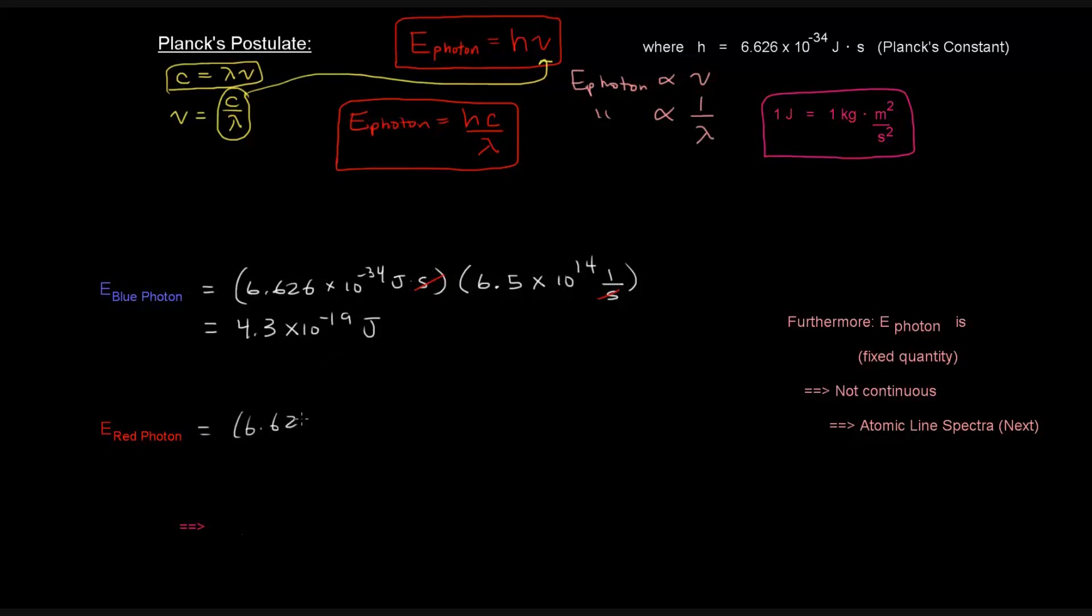So the same thing for the red photon. 6.626 times 10 to the negative 34 joules times seconds times its frequency, which was 4.5 times 10 to the 14th, 1 over seconds. Again, the seconds will cancel, and we'll be left with joules, and in this case, the answer is 3.0 times 10 to the negative 19 joules. Sometimes these could be written as joules per photon.